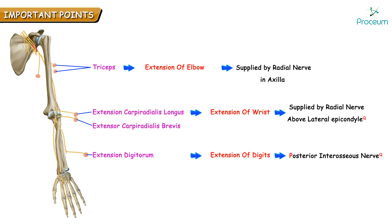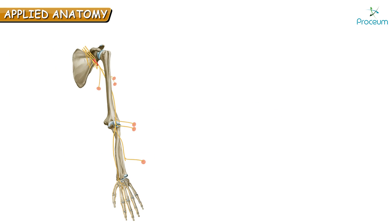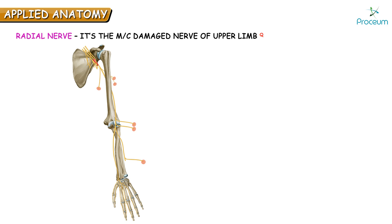Talking about some important applied anatomy aspects related to the radial nerve: it is the most commonly damaged nerve of the upper limb. Depending on the level of injury, the presentation can be different, and it is important to be able to localize the site of the lesion.